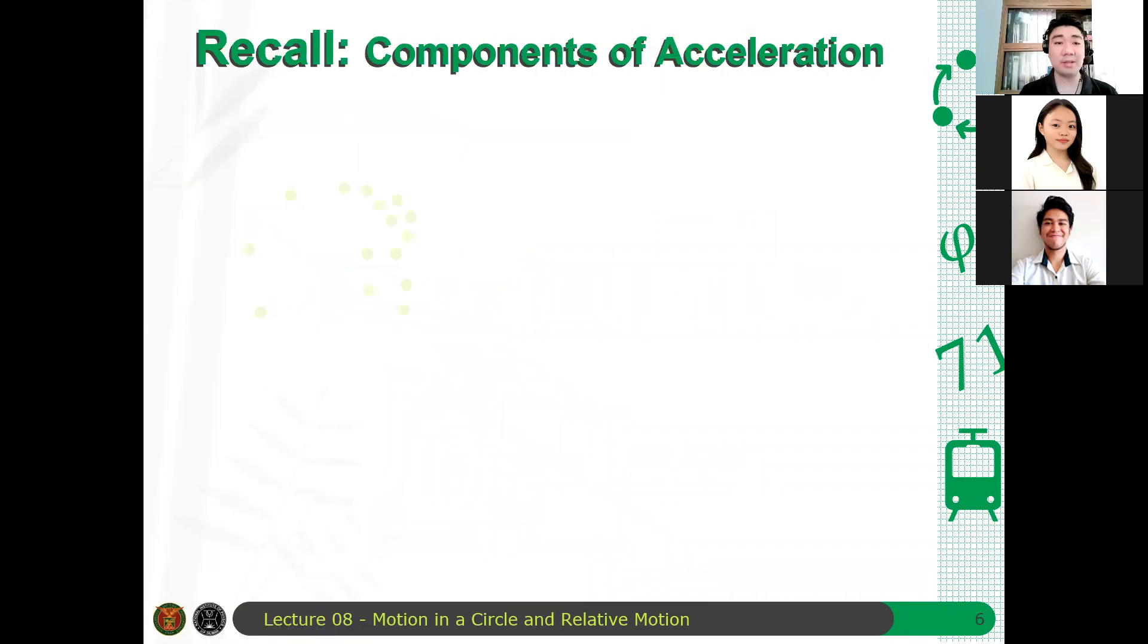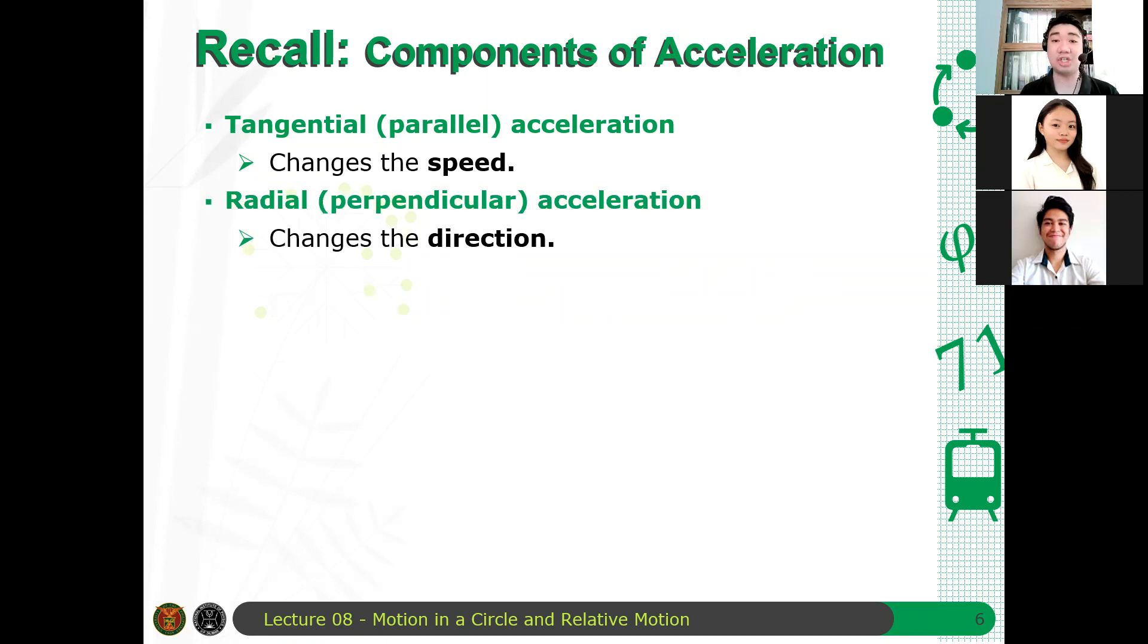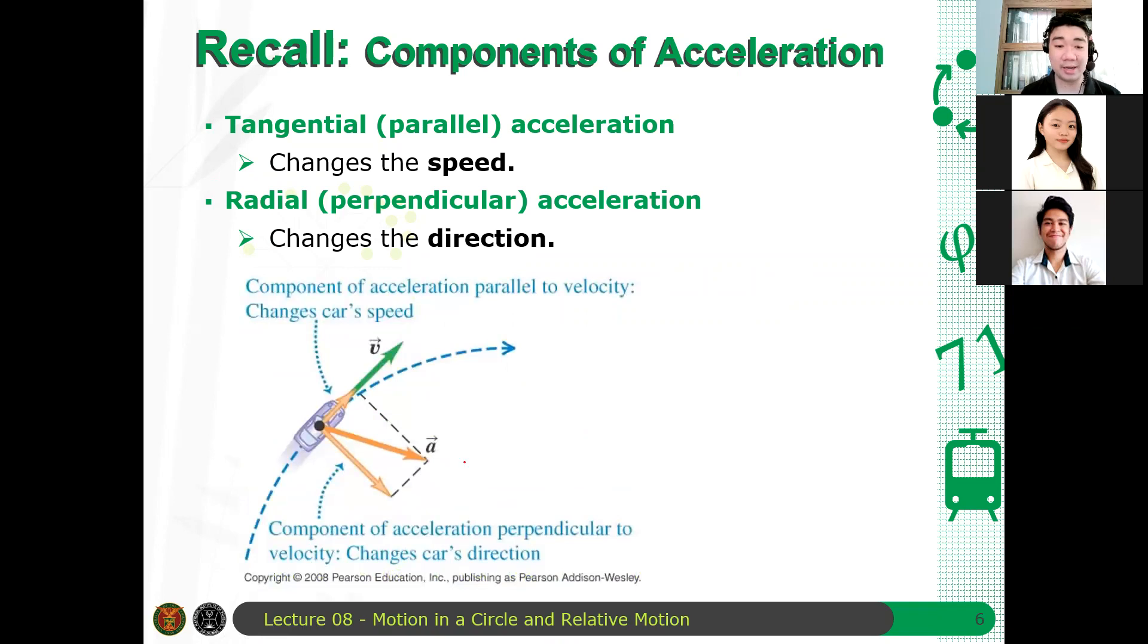Now, what if the tangential component, again, changes the speed? So, it changes the magnitude of the velocity of a particle. Whereas the radial acceleration, it changes the direction. So, halimbawa meron kang particle na ganyan. Since this acceleration here is in the direction, kapag nag-decompose ka, this component of the acceleration is parallel to the velocity, which is, again, tangential to the path, we will see that the acceleration adds up to the velocity, contributes to the velocity, and therefore, it makes the particle, or in that case, the car, speed up. Bumibilis yung car. Kapag nagdagdag ka ng component ng acceleration in the same direction as that of the velocity. Questions?